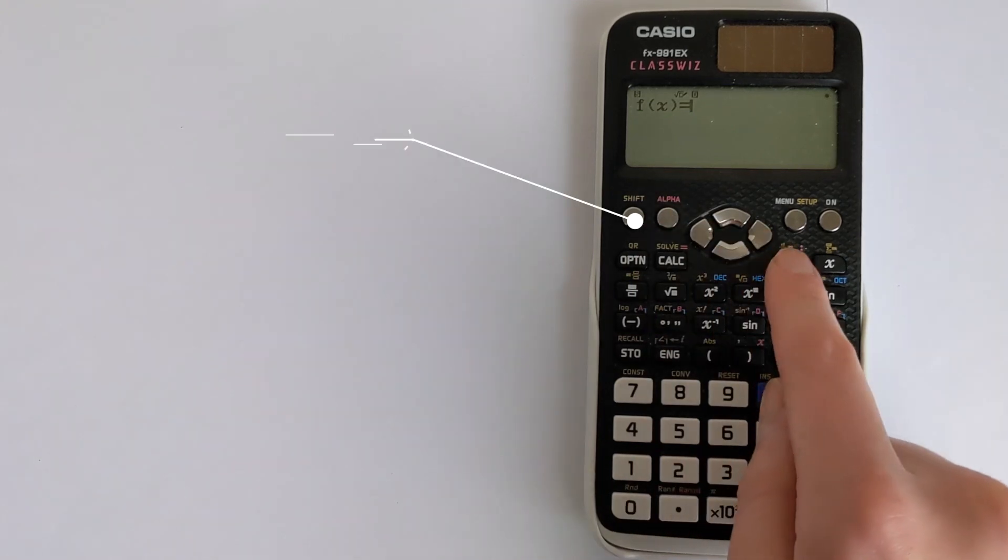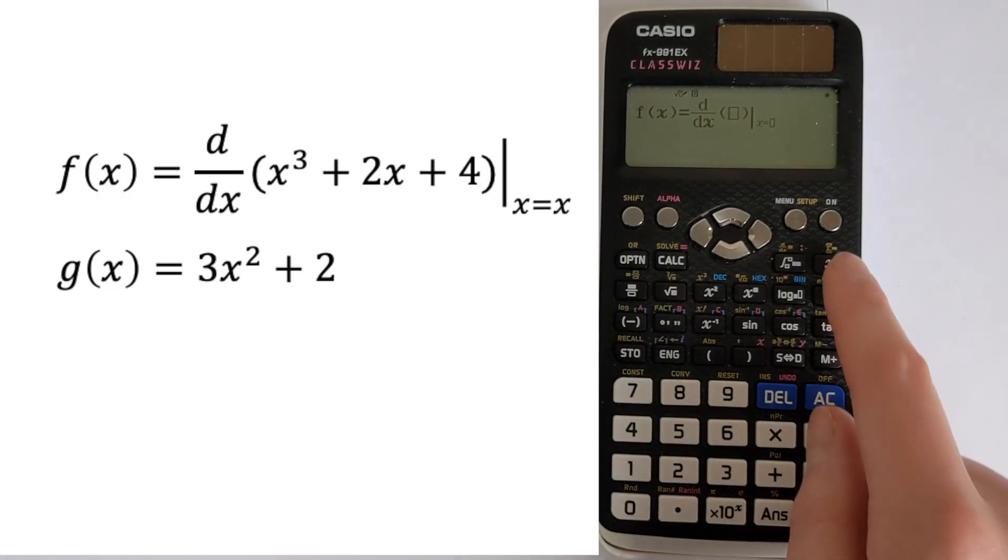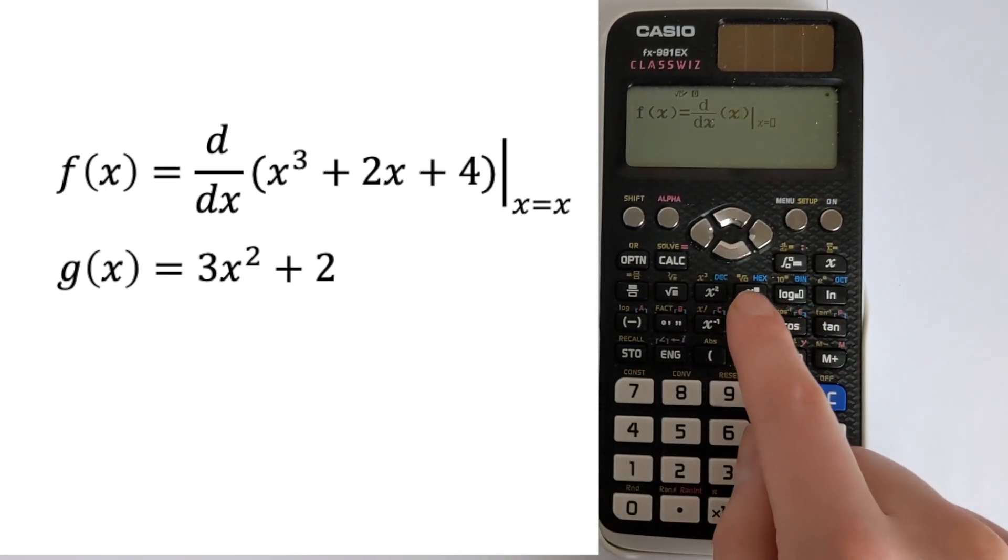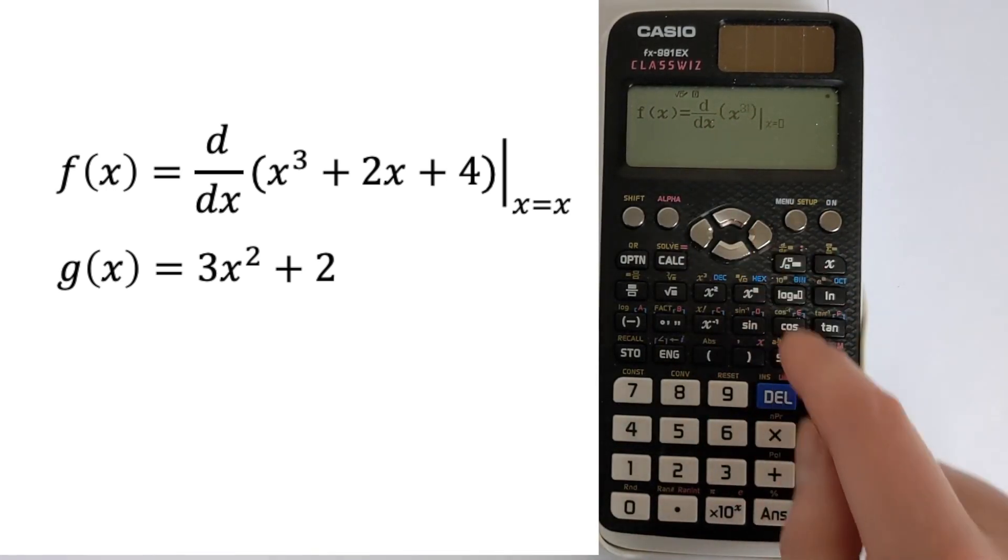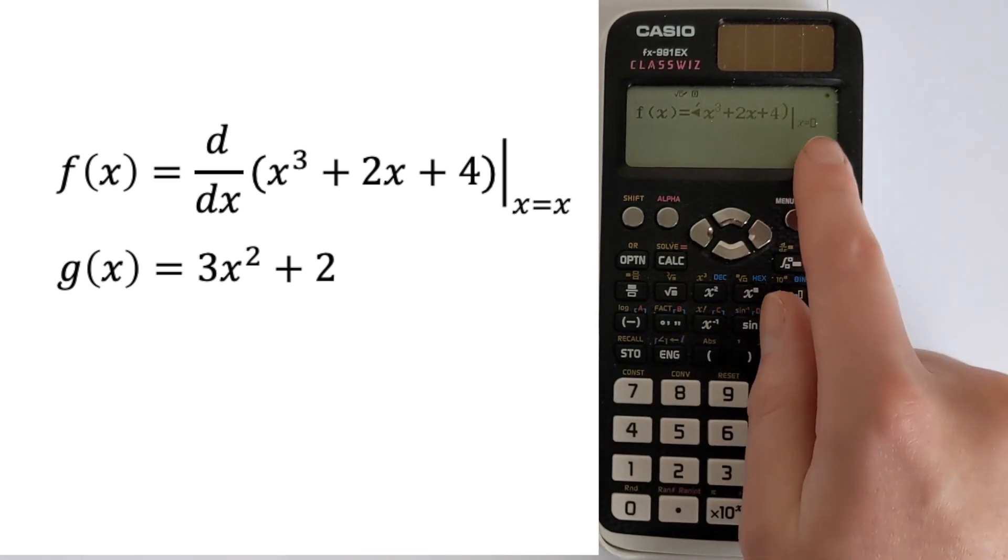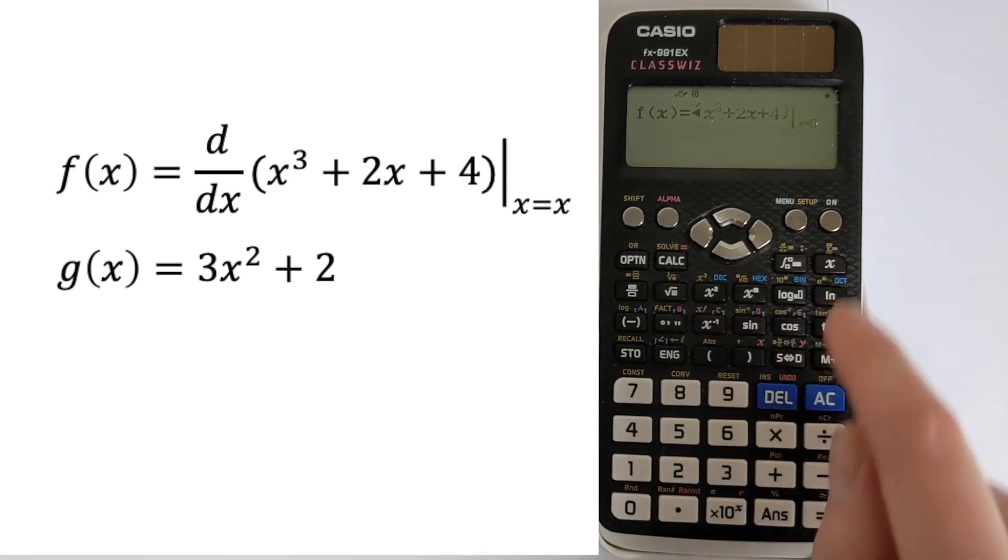So we're going to go shift, then we're going to start typing out the derivative. So we want, this is our function in here. So we're finding the derivative of that function. So we want x cubed plus 2x, and then we want plus 4. And then we're going to evaluate this as x equals x.